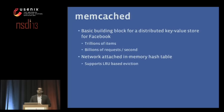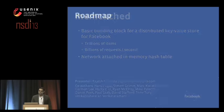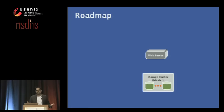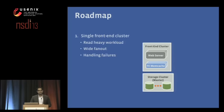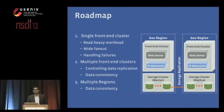Our basic building block for a distributed key-value store is based on memcached — it's just a network-attached in-memory hash table. A lot of the concepts here apply to any similar piece you'd put in that role, but we use memcached. Here's what the rest of the talk looks like: we start with a typical setup of web servers and databases, add a few memcached servers to form a front-end cluster — handling read-heavy workload, wide fan-out, and failures — then scale to multiple front-end clusters where data replication and consistency become interesting, and finally talk about multiple geographic regions.